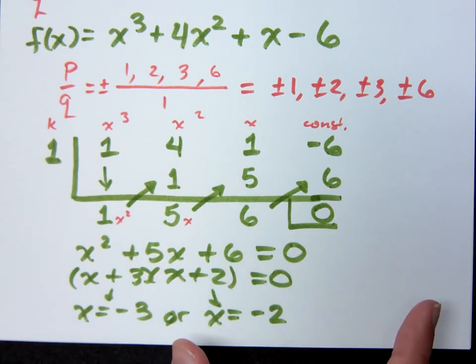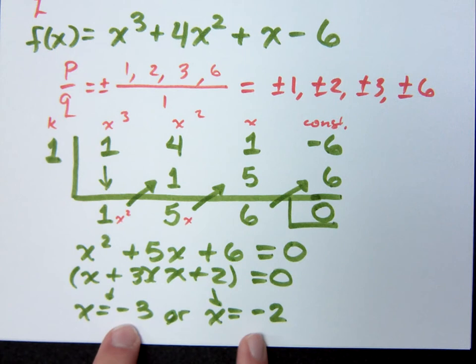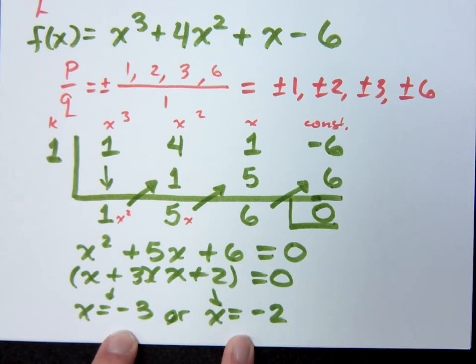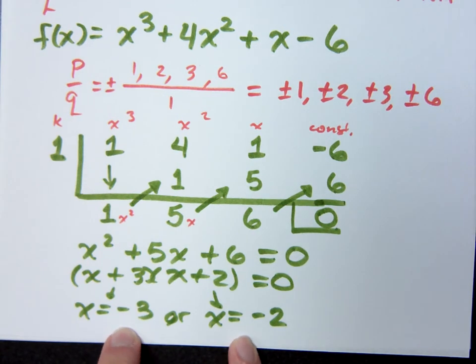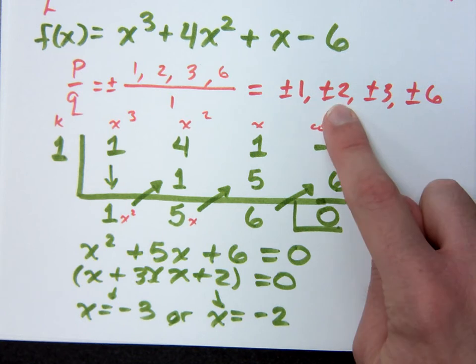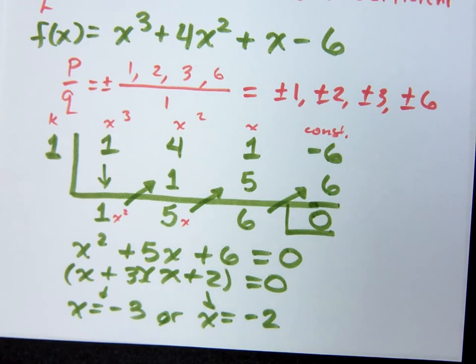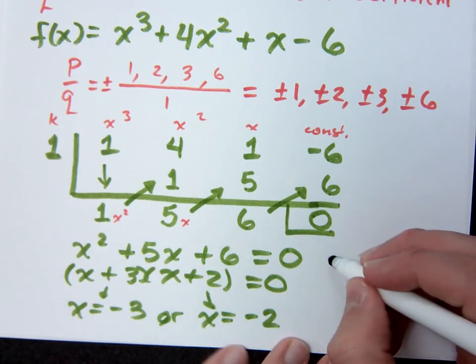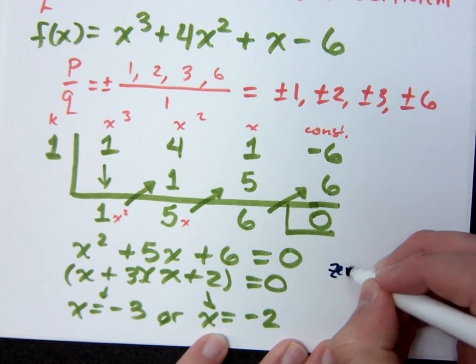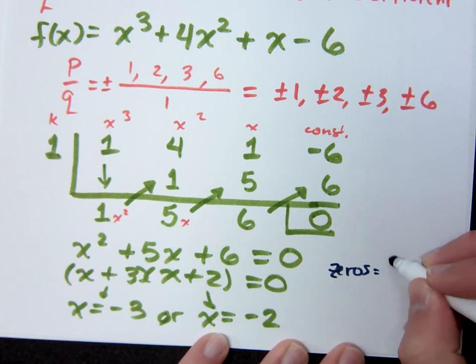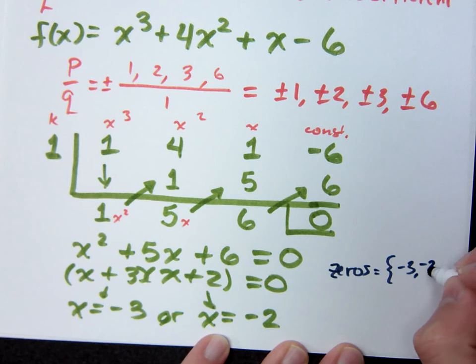Now look at my answers here. Are these answers acceptable and do they match up with what my possibilities were? Yeah. Here's negative 3 and here's negative 2. They were possible rational zeros. So it matches up. It makes sense. So when I list my zeros, the zeros are negative 3, negative 2, and 1.